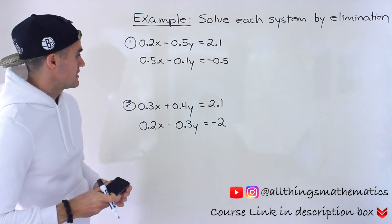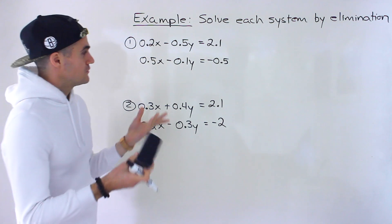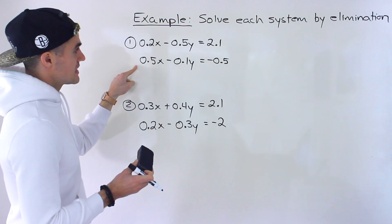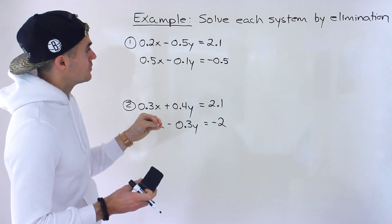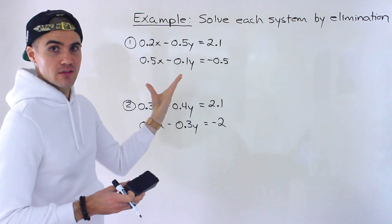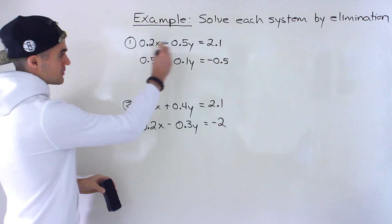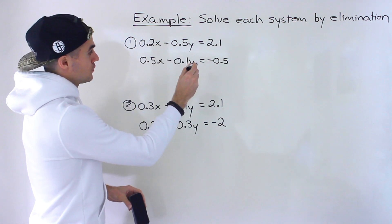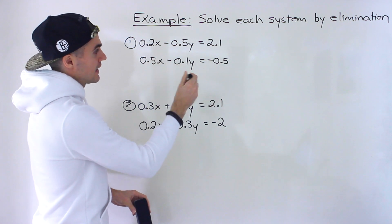Notice that these are in decimals. There are a couple of different things you can do here — you can work with these decimals if you want. Personally, what I do is get rid of the decimals and convert everything to integers. With this particular system, we have 0.2x minus 0.5y equals 2.1, and 0.5x minus 0.1y equals negative 0.5.